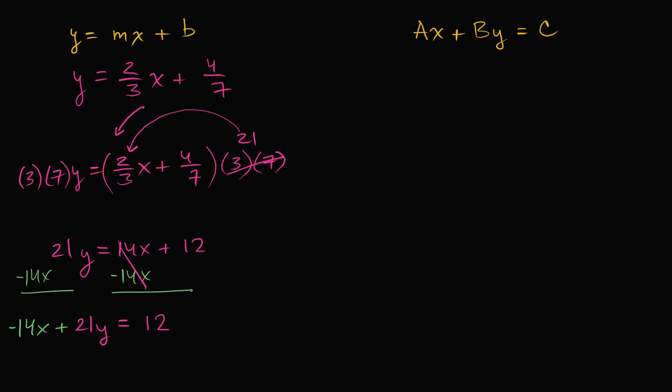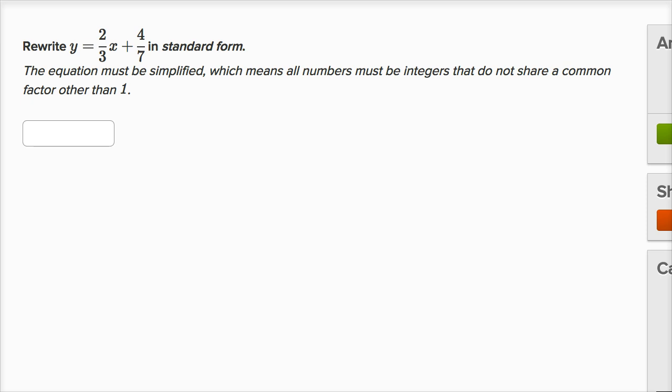So let me see if I can remember that and type that in. So it is negative 14x plus 21y equals 12. Let's see if I got it right. It worked out.